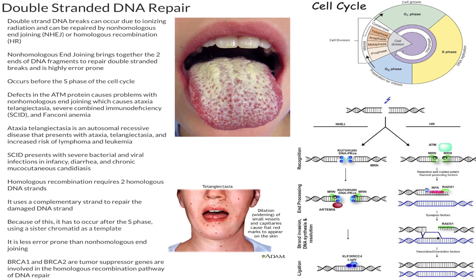Now what happens if there's an issue with non-homologous end-joining? Defects in the ATM protein can cause problems with non-homologous end-joining, and this can cause the disease ataxia telangiectasia, severe combined immunodeficiency, as well as Fanconi anemia.